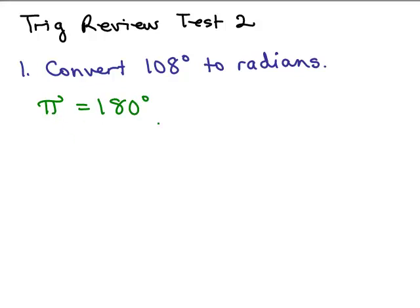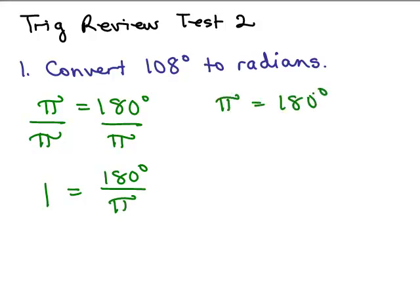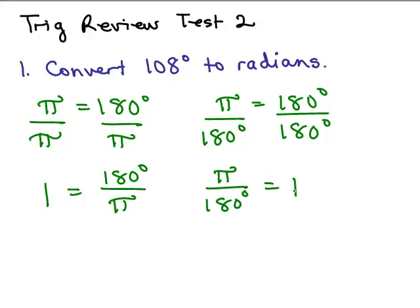So if they're equal to each other, then I can divide both sides by the same number. Let's say I divide both sides by π, then that says 1 is the same thing as 180 degrees over π. On the other hand, if I divide both sides by 180 degrees, then that says π over 180 degrees is also equal to 1.